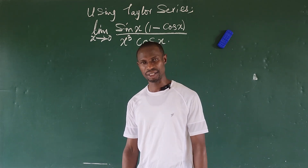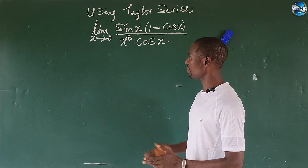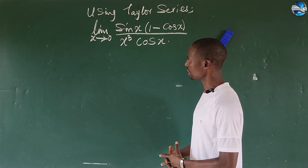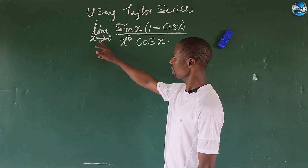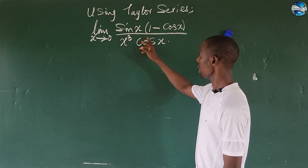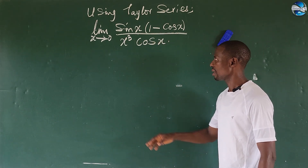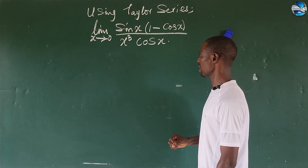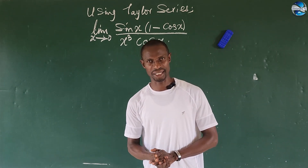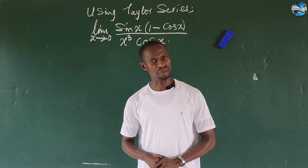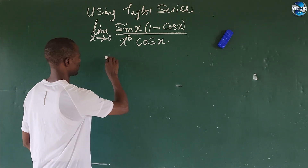Hello, welcome to today's class. Today we have this math challenge: we are asked to use the Taylor series in solving the limit as x approaches zero of sine(x) times bracket one minus cos(x), all over x to the power of three times cos(x). So how do we solve this? Let's go into this challenge without much waste of time.